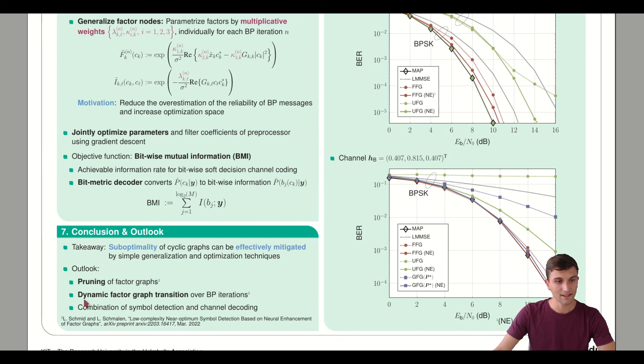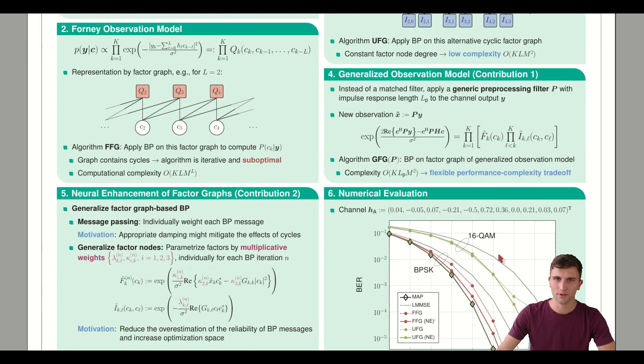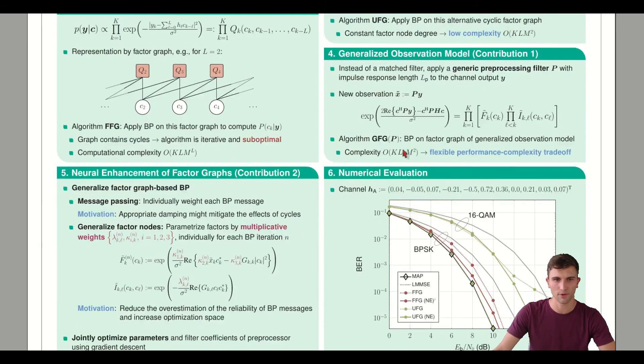As a second step, we applied dynamic factor graph transition, which means that, similarly to the generalized observation model, we change the observation model, but we dynamically do this in each belief propagation iteration. Thereby we hope to make the messages more independent, since the graph is evolving over the belief propagation iterations.